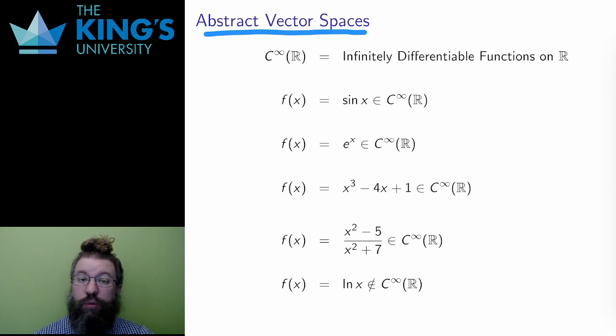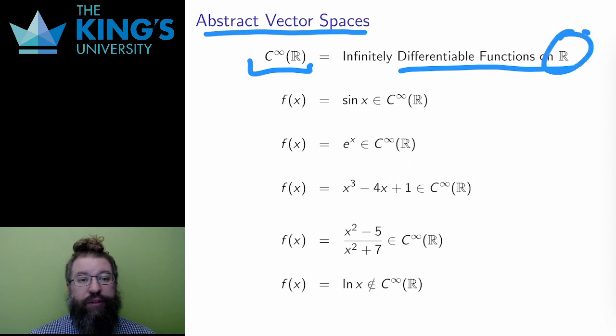The same is true for eigenvalues and eigenvectors. I can also extend these ideas to an abstract vector space. I want to give a very important and a little bit familiar example of this. Therefore, consider the set C∞(R), which is the set of all differentiable functions with domain real numbers. The infinity here means that these functions can be differentiated any number of times.